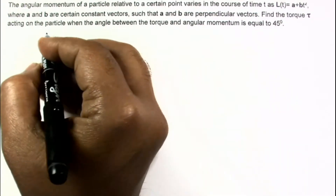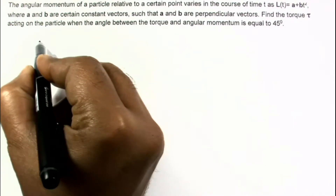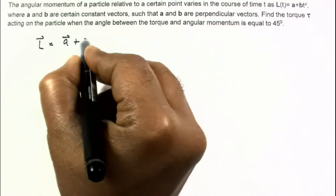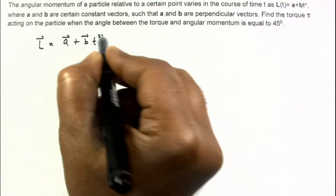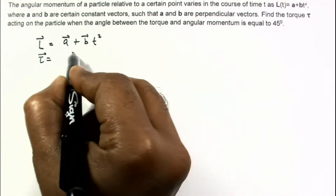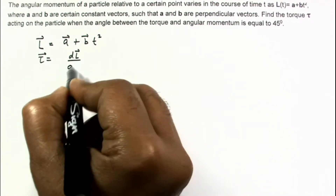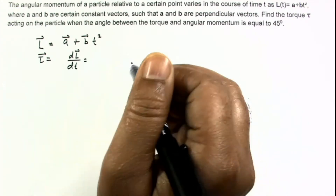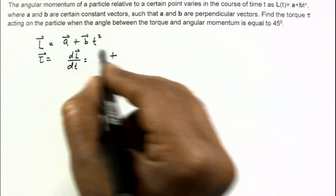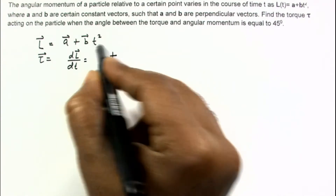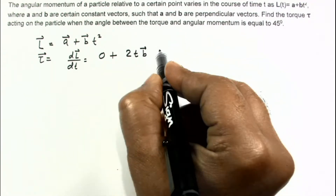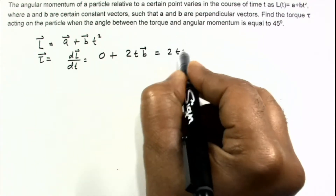It is given that the angular momentum vector l = a + bt². We know that torque is defined as the rate of change of angular momentum, dl/dt. Since a is a constant vector, its differentiation is 0. For bt², differentiation gives 2t·b. So torque at any time t is 2t·b vector.